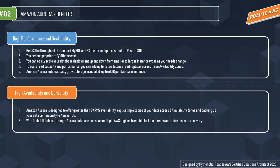The next benefit is high availability and durability. Amazon Aurora is designed to offer greater than 99.99% availability, replicating six copies of your data across three availability zones and backing up your data continuously to Amazon S3. With the global database feature, a single Aurora database can span multiple AWS regions to enable fast local reads and quick disaster recovery.